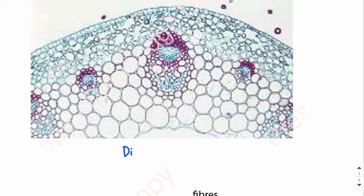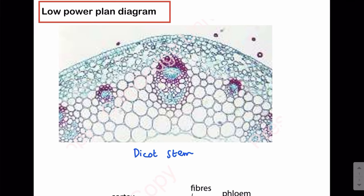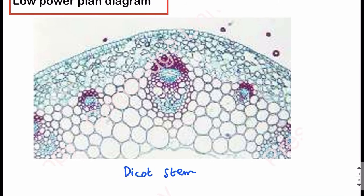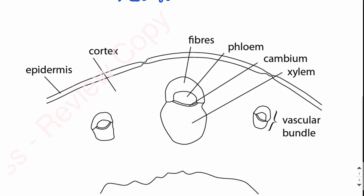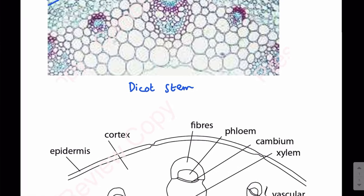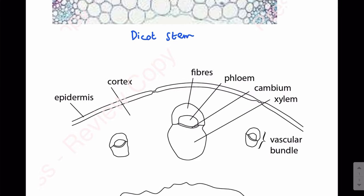For example, if you are observing a dicot stem under the light microscope at low power, you see a picture like this. If you are asked to draw a plant diagram, you just need to draw the outlines of the tissues that you see. To figure out distinct tissues, look for distinct types of cells — this tissue is somewhat different from others because the cells in it are different. So this is one distinct tissue, and you just draw its outline.